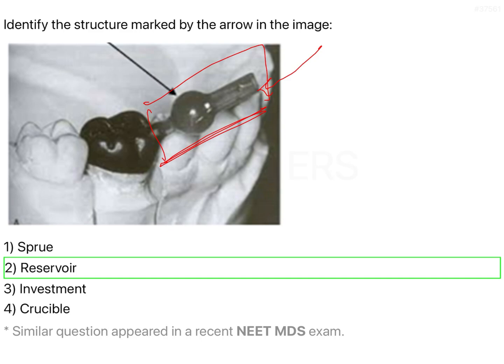As a result, the casting will be inadequate and deficient. To prevent this, a reservoir is provided, and the reservoir will continuously remain hot enough to keep the molten alloy there. When the molten alloy flows from the attachment apparatus into the reservoir, it stays at a particular temperature and then flows through the neck into the wax pattern. This ensures a continuous supply of alloy, so that as the alloy fills all areas of the wax pattern, the reservoir pushes in more alloy, resulting in a complete and non-deficient casting.